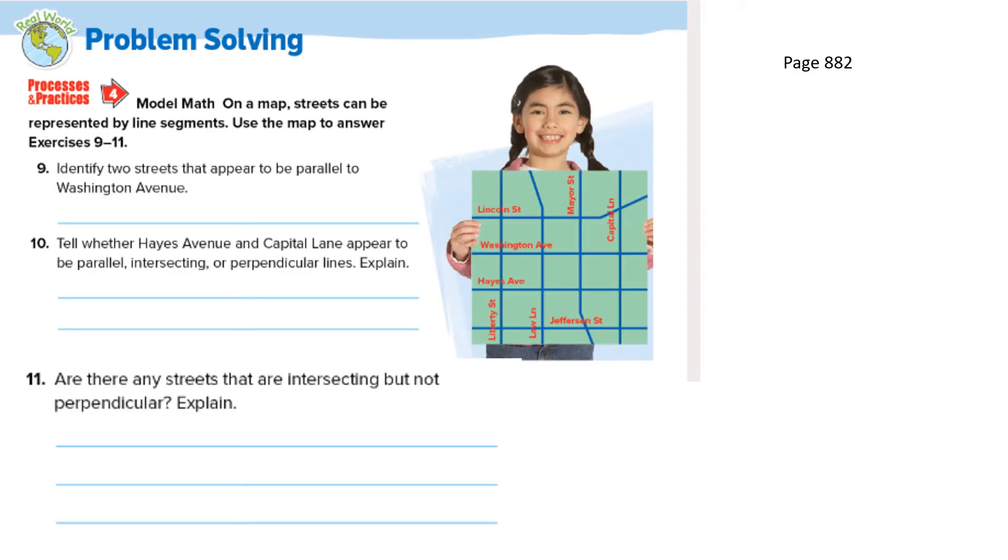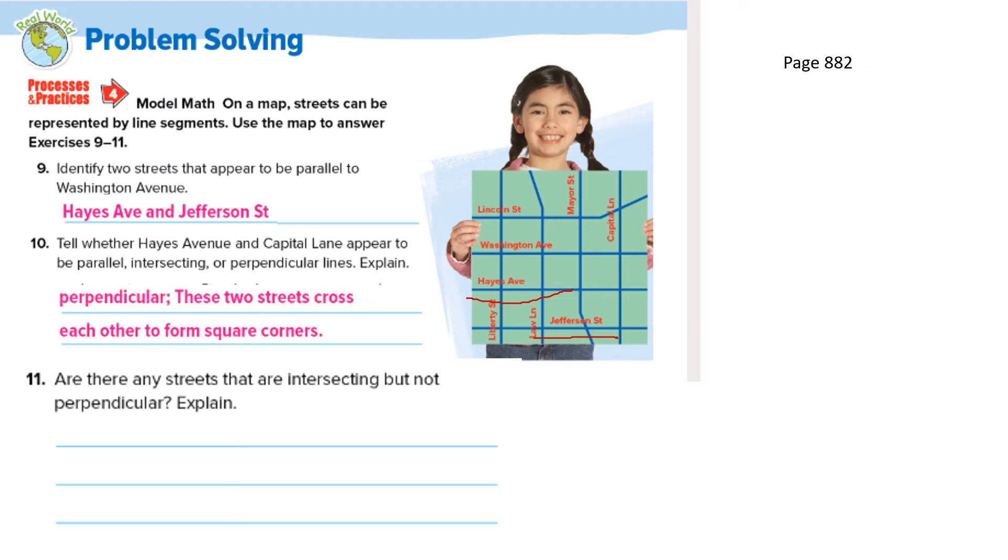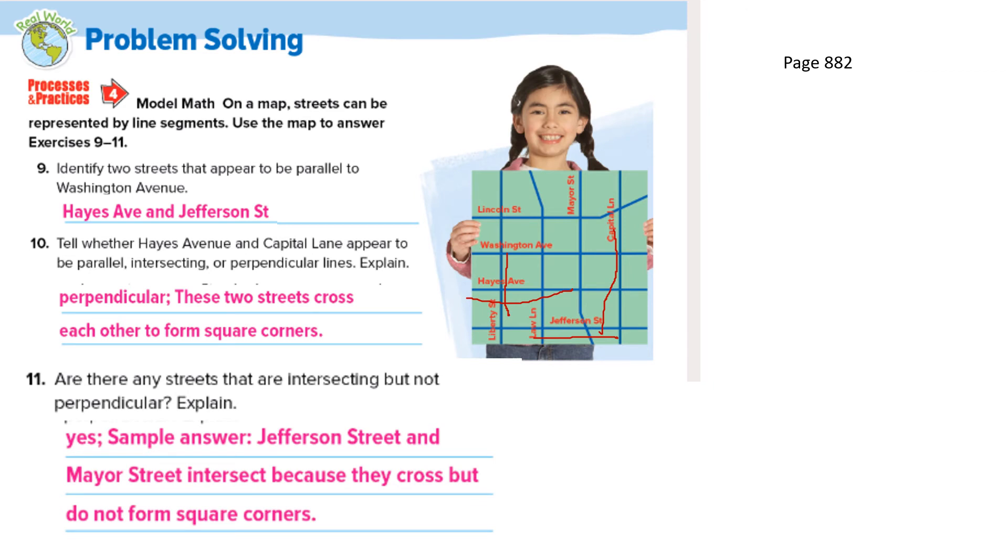Let's continue with page 882. I'd like you to complete 9, 10, and 11 right now. Stop the video, and then you'll be able to correct. For number nine, the two streets that are parallel will be Hayes Avenue and Jefferson Street. That's two of them. Tell whether Hayes Avenue and Capital Lane appear to be parallel, intersecting, or perpendicular. They're perpendicular, aren't they? Do you see where Hayes comes in here? And a Hayes and Jefferson Street. And Capital. Sorry, Capital right here. My pen doesn't work so well, does it? Are there any streets that are intersecting but not perpendicular? Yeah, Jefferson Street and Mayer's Street both intersect, but they don't have square corners.